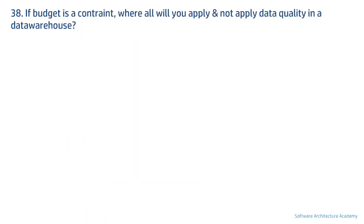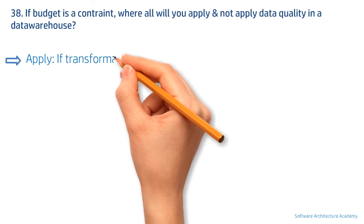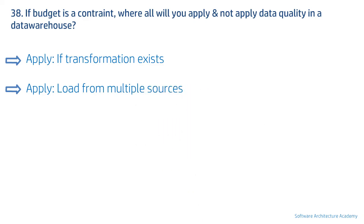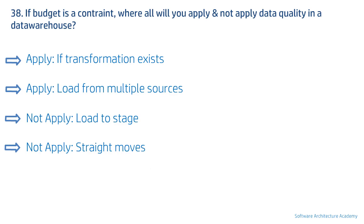The next data quality question is: if budget is a constraint, where will you apply and not apply data quality checks in a data warehouse? Too many data quality checks slow down a system and cause delays in data provisioning. Ideally, if transformation exists, it makes sense to add a data quality check there. Also, if there are data joins from multiple sources or feeds, apply a check there. On the other hand, column-level checks can be avoided during load to stage, as the idea of stage is to have a copy of source data as-is. For straight moves, data quality checks can be avoided if there are budget or performance constraints.